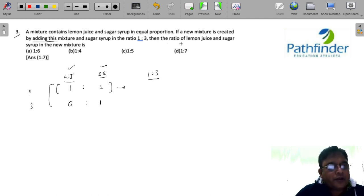And now you are looking at, you want to find out the ratio of lemon juice and sugar syrup in the new mixture. So the quantity of lemon juice, lemon juice comes only from the first mixture of lemon juice and sugar syrup.